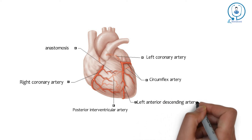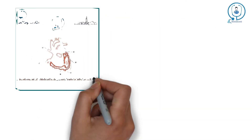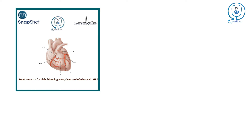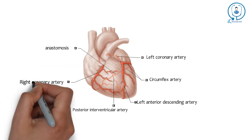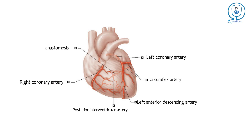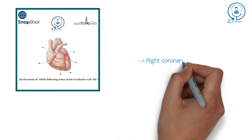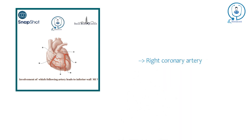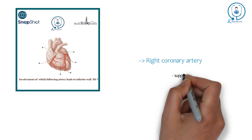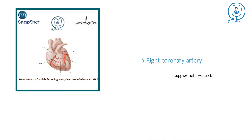We are starting with the basics. Our next question with the same image: involvement of which artery leads to inferior wall MI? It is the involvement of the right coronary artery. The involvement of the right coronary artery is going to lead to inferior wall MI. The right coronary artery supplies the right ventricle.